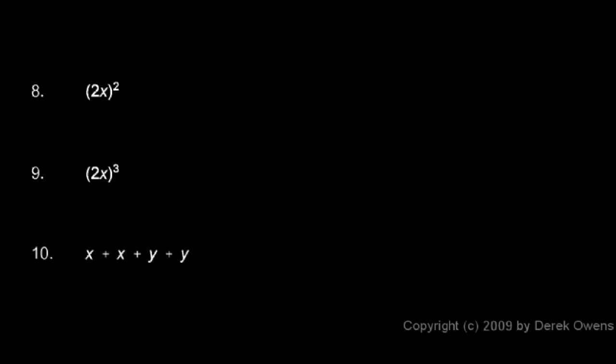In number 8, we have (2x)², and this is different from the earlier one. Instead of 2x times 2, this is 2x to the power of 2. Raising something to the power of 2 means multiplying it by itself. So you can think of this as 2x times 2x, and those are all multiplied together. You can think of this as 2 times 2 times x times x, which would give us 4x², and that's the answer.